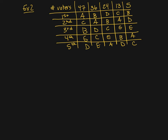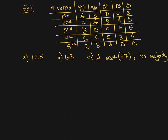Our second example has the preference schedule already given to us with a couple of questions. First: how many voters are there total? We add up all the voters — 47 plus 36 plus 24 plus 13 plus 5 — and I got 125. How many first place votes are needed for a majority? We take half and round up, so 63 are needed for a majority. Which candidate has the most first place votes? A has 47, B has 36 plus 5 which is 41, C has 13, D has 24, and E has none. So A has the most with 47, but they don't have a majority — they didn't reach 63.